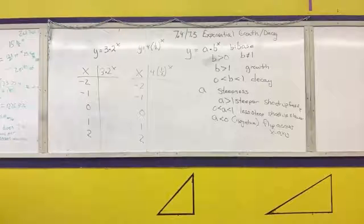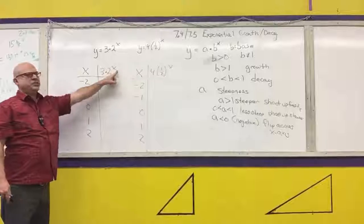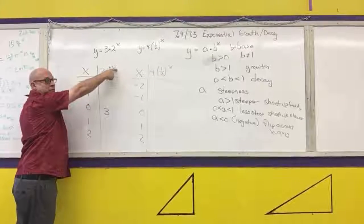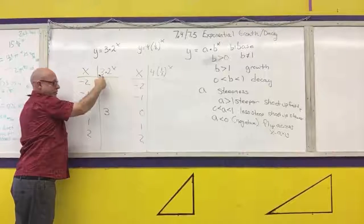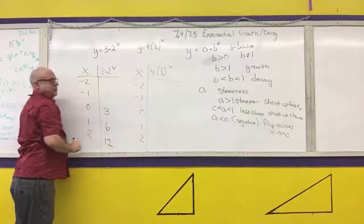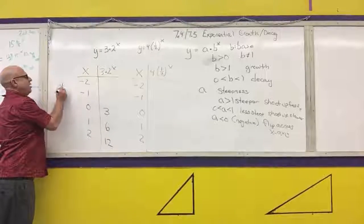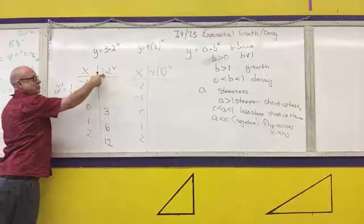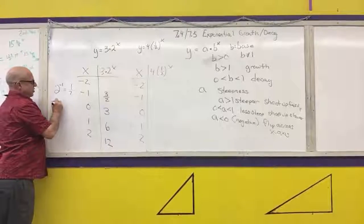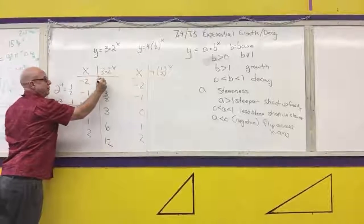Let's find the y-values. We always start with the easiest: x = 0 and x = 1. What is 2 to the zeroth? 1. And 1 times 3 is 3. What is 2 to the first? 2. And 2 times 3 is 6. What is 2 squared? 4. Times 3 is 12. What is 2 to the negative 1? That's 1 over 2, and one-half times 3 is 3-halves. What is 2 to the negative 2? That is 1 over 2 squared, which is one-fourth. And one-fourth times 3 is three-fourths.